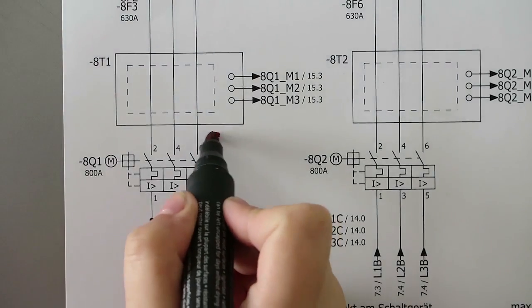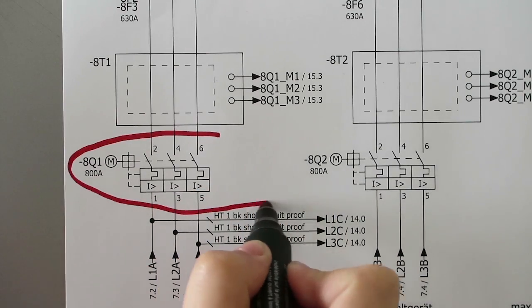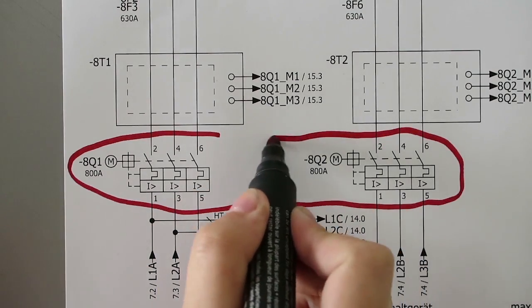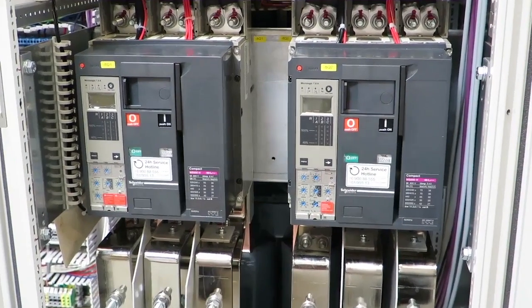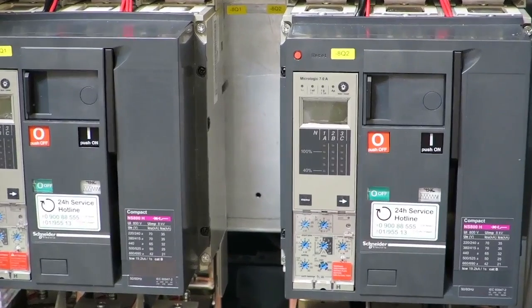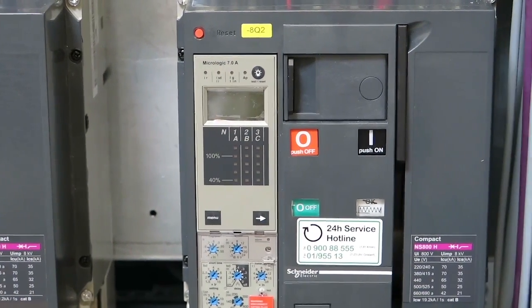To reduce the harmonic current distortion, the drive can be operated in a multipulse way. For 12-pulse, we will equip the drive with two rectifiers, two sets of fuses, and two circuit breakers.